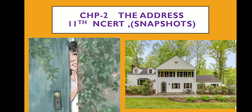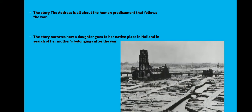We are reading the second lesson of the NCERT book - 'The Address'. In this video we are going to discuss its detail summary. This story is about a girl, or you can say a daughter, who goes to an address to get some of her mother's belongings. That is why this lesson is named 'The Address'. A war happened in Holland, and during the war her mother gave some belongings to a friend or acquaintance for safekeeping.